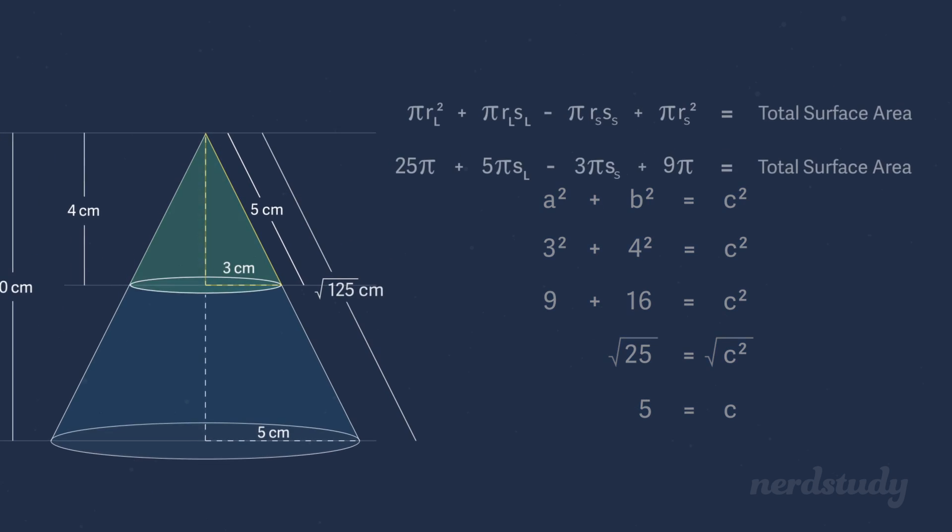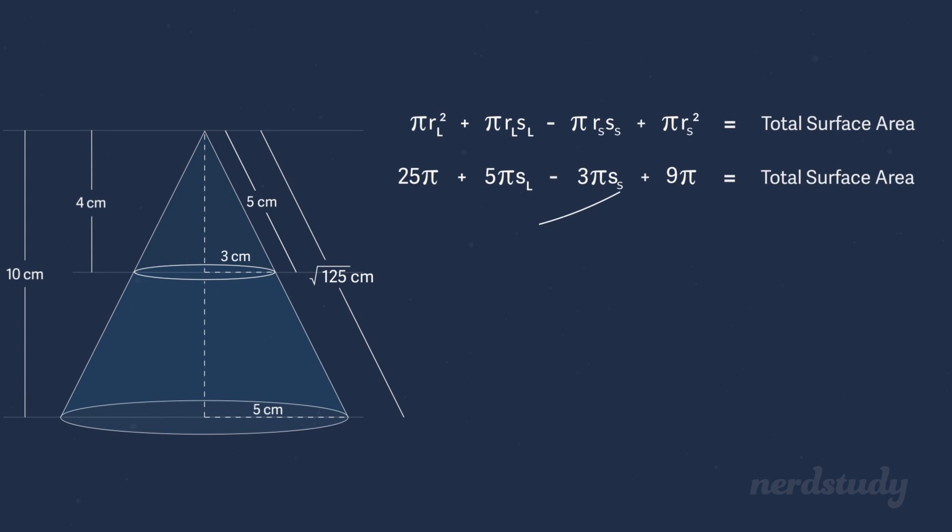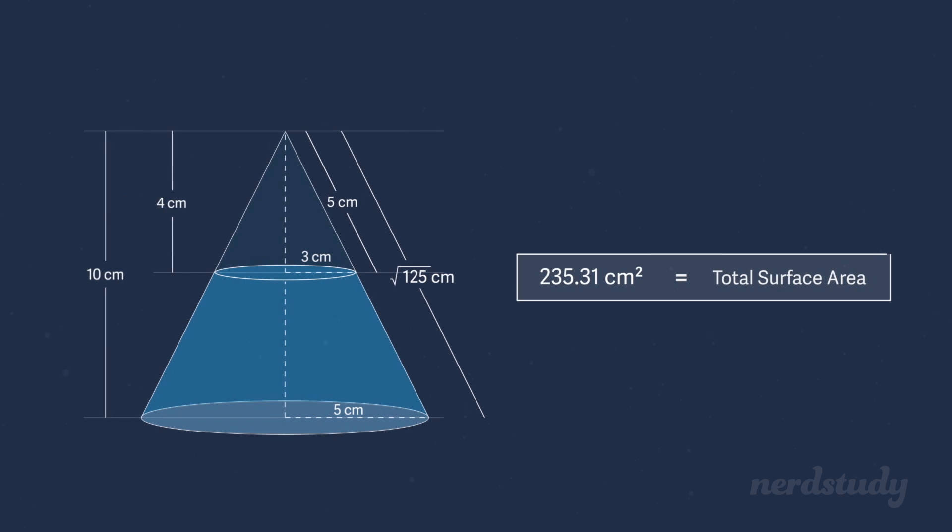So now that we have all our values, let's plug these numbers back into the equation that we made for ourselves. Now, if we simplify all this by putting it into our calculator, we get a final value of roughly 235.31 centimeters squared as our total surface area for this section. Awesome.